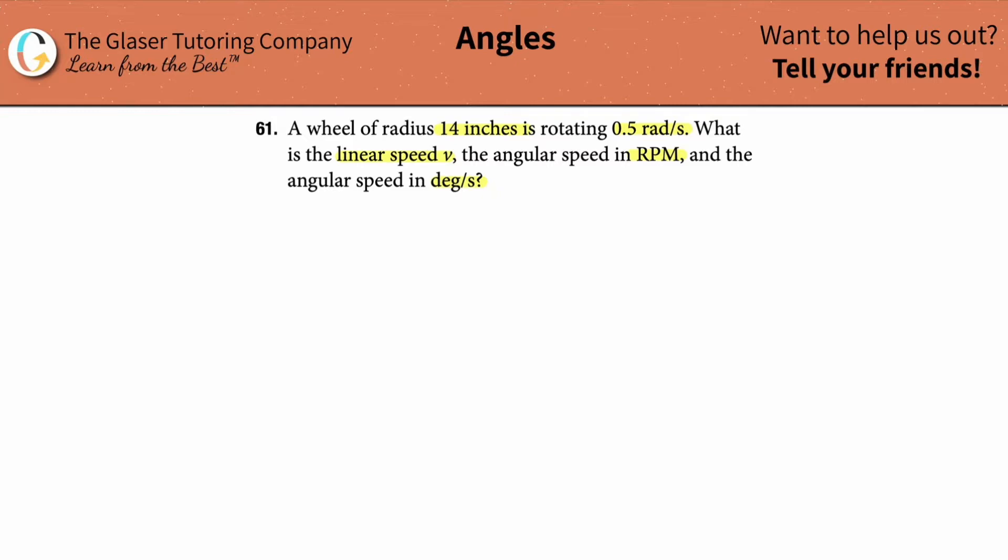So I think what I'm going to do first is just find the degrees per second. Since they gave us the radians per second, this is actually a very simple conversion. In other words, we can take 0.5 radians per second. And this is per second like every single second. And what we're going to do is we're going to set up a conversion here.